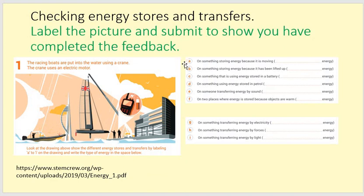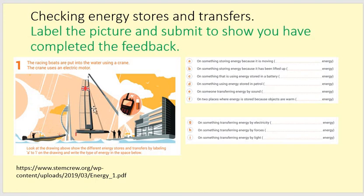Now, we have a number of different energy stores here. At the top, we have energy stores with blank spaces where we can name them — that will help us think about the types we're looking at in the picture. We identify the type of stores and then put these letters where they are occurring in the picture. At the bottom, we have three energy transfers: a transfer by electricity, a transfer by forces, and a transfer by light — again, to be labelled on the picture. What you are going to be sending me at the end is a copy of this picture with all these letters in the correct place. Do notice the letter F has two places, so you'll need two letter F's on there.